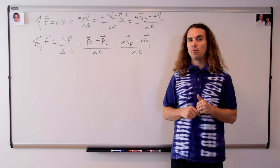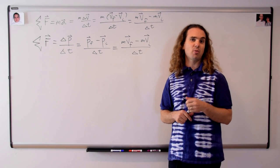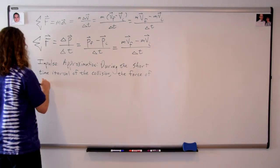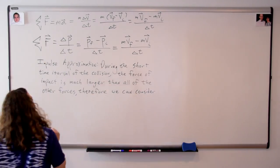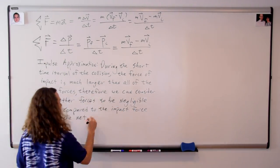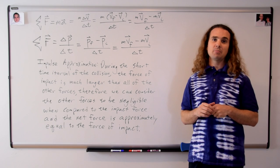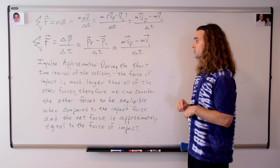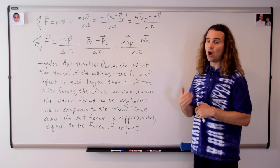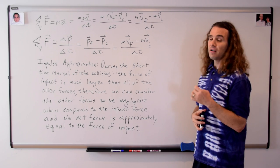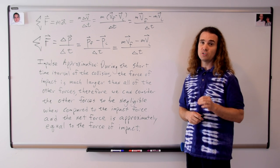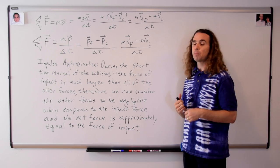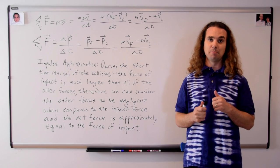Before we start analyzing the equation, I want to point out that we're going to use the impulse approximation for the net force. The impulse approximation is the basic idea that, during the short time interval of the collision, the force of impact is much larger than all of the other forces. Therefore, we can consider the other forces to be negligible, and the net force is approximately equal to the force of impact.